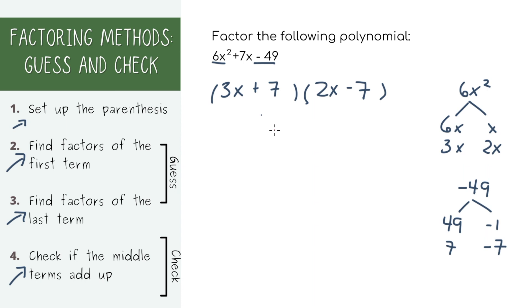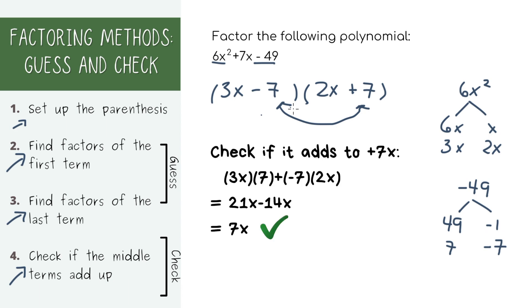But just because I've done this problem before, I know you have to switch the 7 and negative 7. When we're checking, we'll get 21x minus 14x, which is indeed 7x. So we have the right factors. The more you do these problems, the more intuitive the guessing part becomes, so it just comes down to doing a bunch of practice problems.